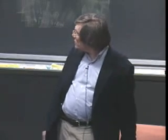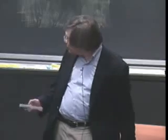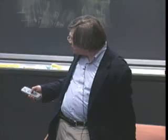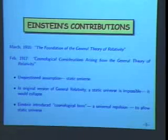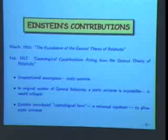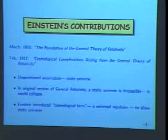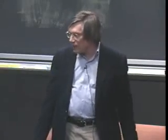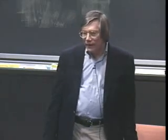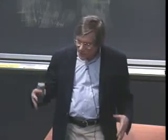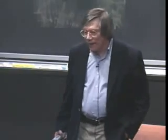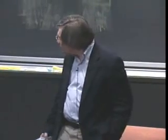Einstein found this an unavoidable consequence of the original form of his theory of general relativity. But he was still convinced the universe was static and figured out a way to modify it. He introduced what he called the cosmological term — an extra term in the Einstein field equations describing how gravitational fields are created by matter. By adjusting the coefficient, which he called the cosmological constant, to just the right value, he could create a repulsive force that would suspend the universe against collapse, succeeding in constructing a static model.